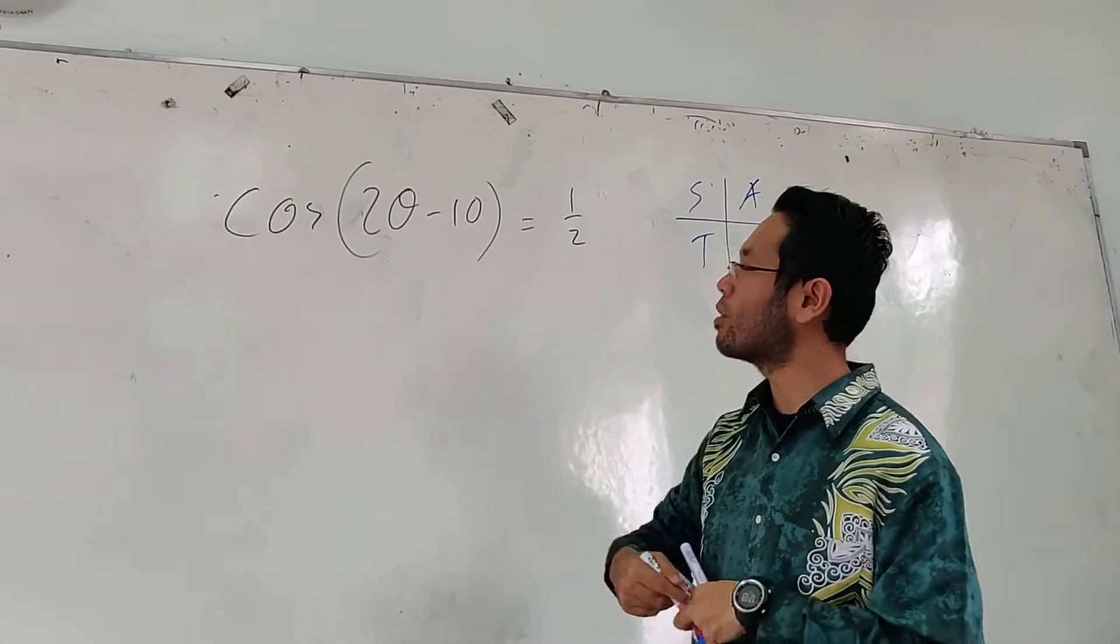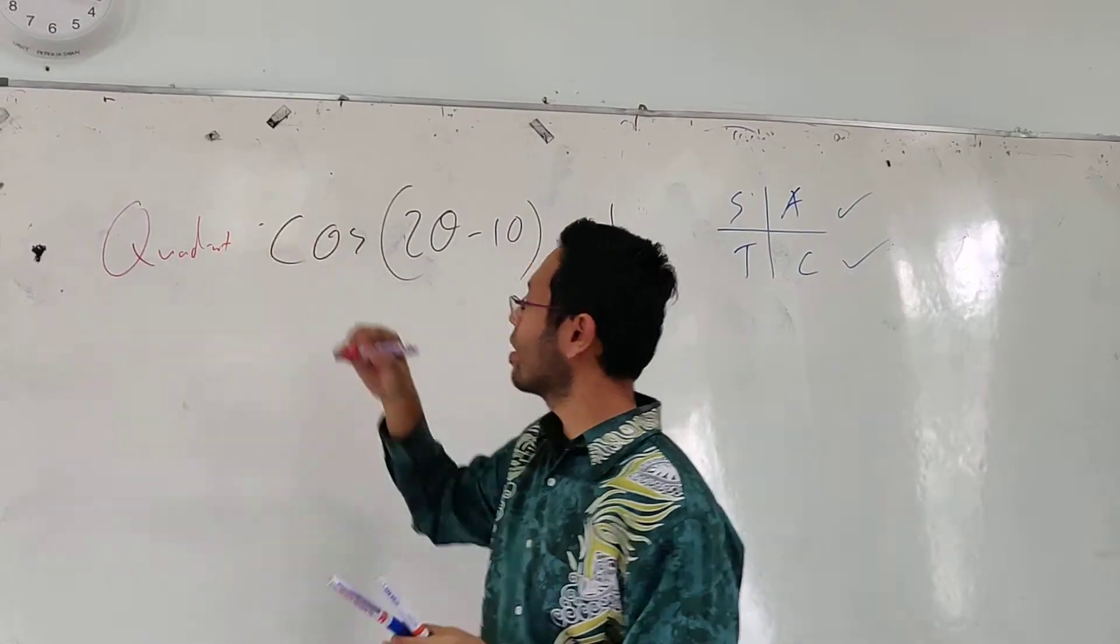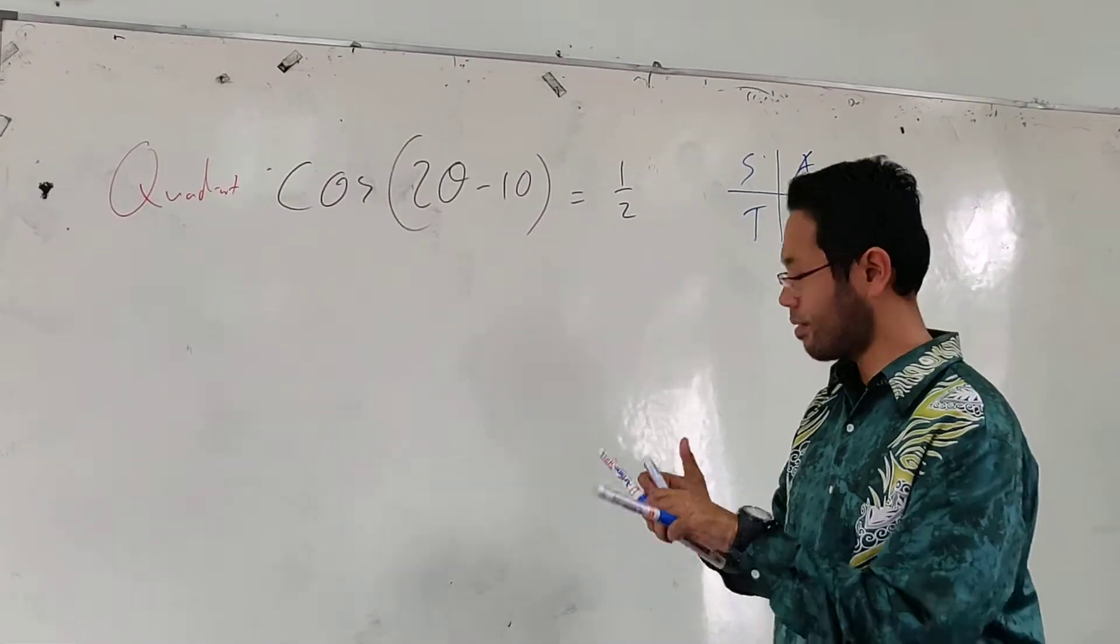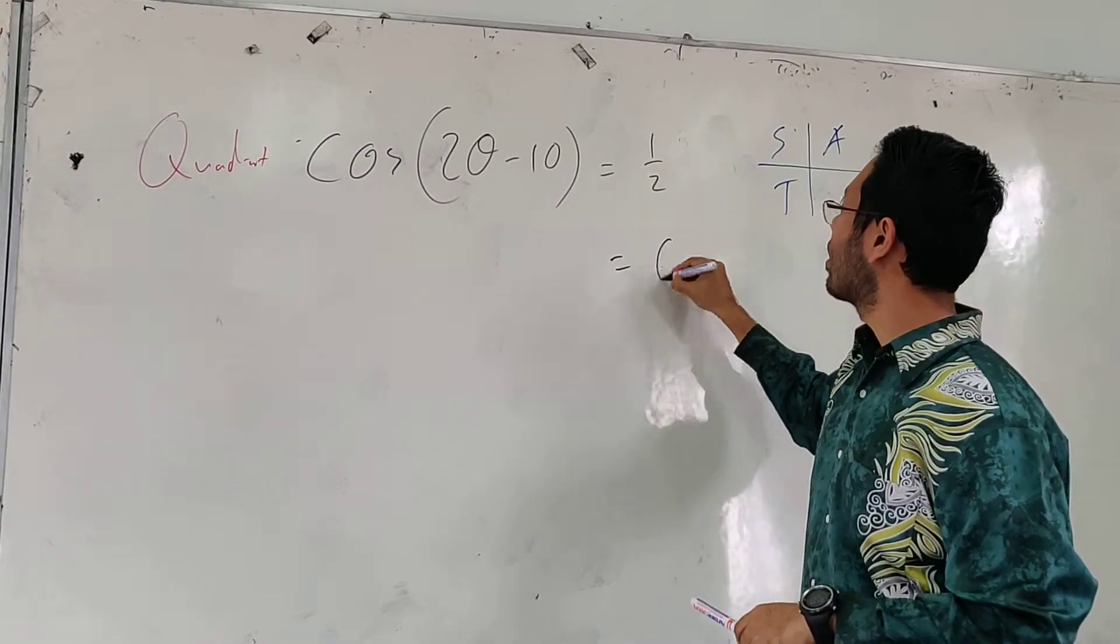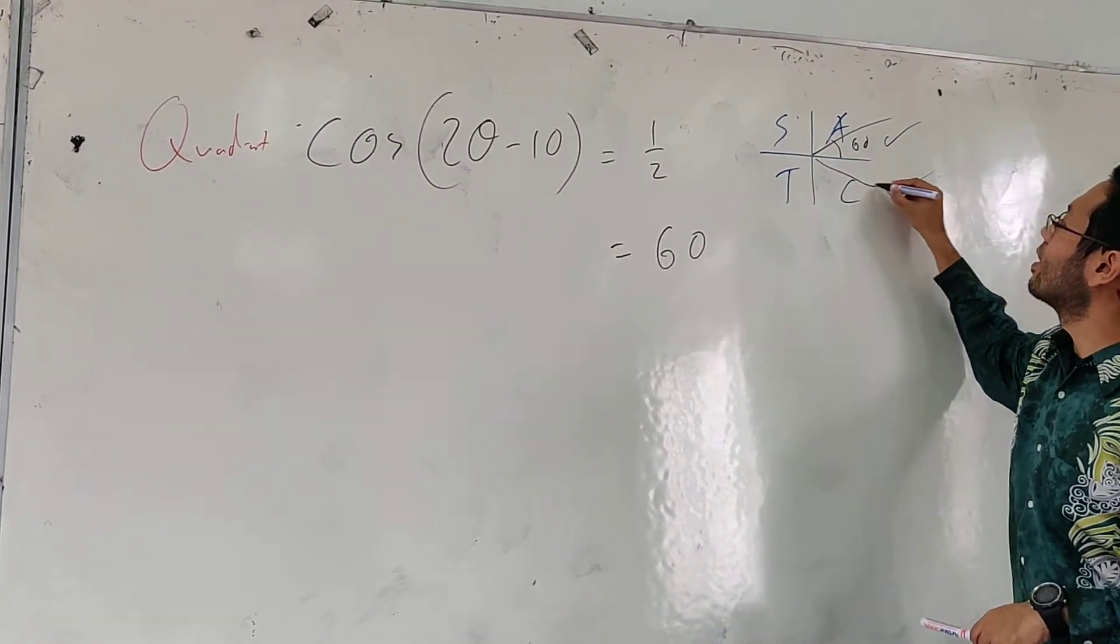So the first thing I recommend you to do is check the quadrant. And then if you press your calculator, I think you know 60. So here is 60. Here is 60.